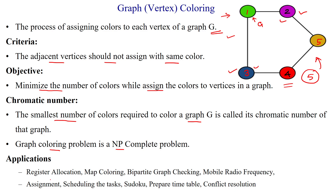Applications of graph coloring include register allocation and map coloring — for example, India map, world map, and district-wise state maps. A bipartite graph has two sets of vertices, and we can assign different colors to each set. Other applications include mobile radio frequency assignment to differentiate frequencies, job assignment problems, scheduling tasks, sudoku, preparing timetables by assigning different colors to each slot or period, and conflict resolution.